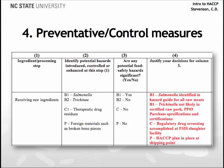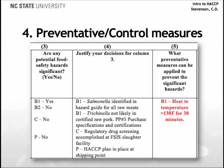Once a decision has been made that a hazard is reasonably likely to occur and must be controlled by the HACCP plan, a control measure must be identified. Note that FSIS uses the term preventive measure rather than control measure — the older terminology was in use when FSIS wrote the regulations, but the term control measure is in current usage. Control measures are actions or activities that will be applied at a specific point to prevent, eliminate, or reduce the hazard to a safe level.